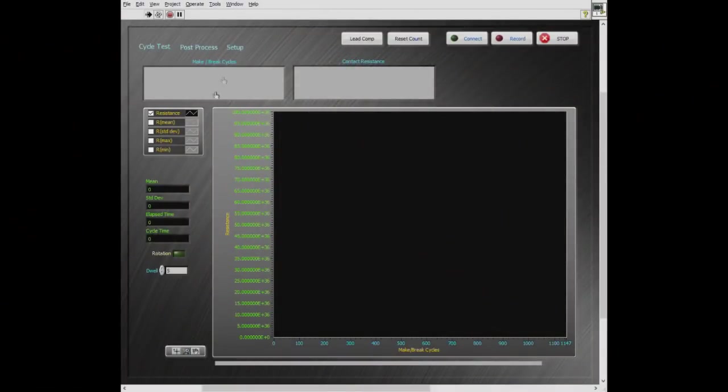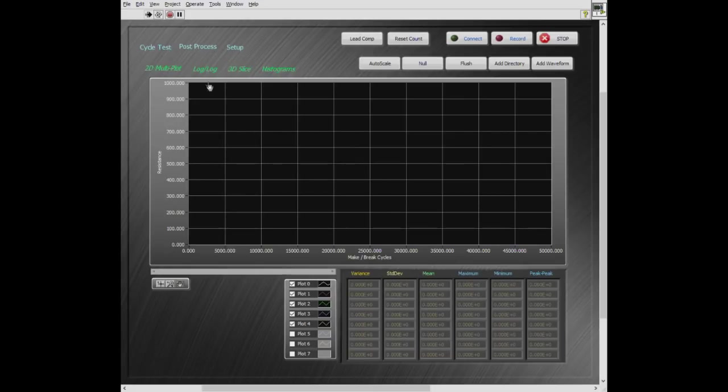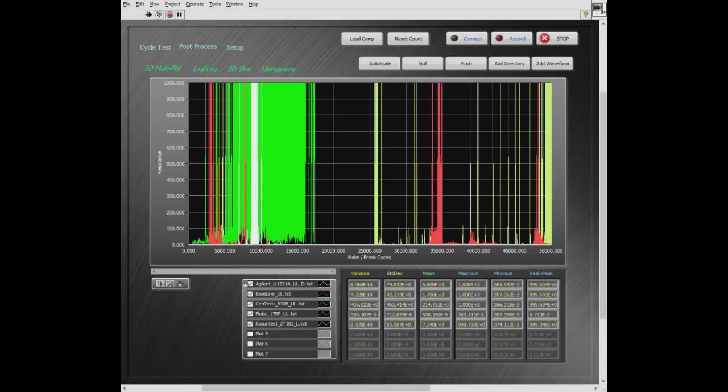There was a little bit of confusion last time I ran this test when we were looking at the log-log and the histogram plots, so I've changed the software slightly. Let's go ahead and load up the files that we have so far. I'm planning on changing the file names so now you could see I have the manufacturer name, the part number of the meter, UL for unlubricated, D in this case would be for damaged, the Fluke would be listed as a used meter, and the Casuntest would be listed as new.